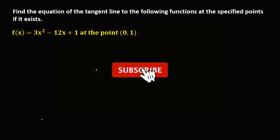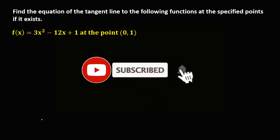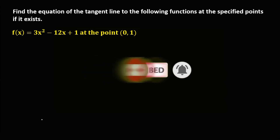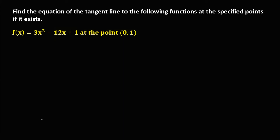Welcome to Math Story. Let's have this topic: find the equation of the tangent line to the following functions at the specified points if it exists. We have the given function f(x) = 3x² - 12x + 1 at the point (0, 1).